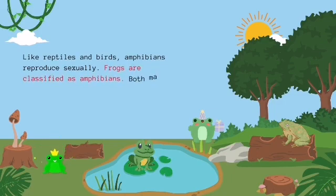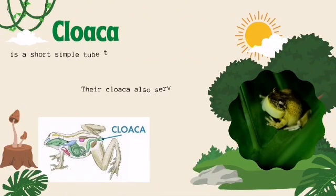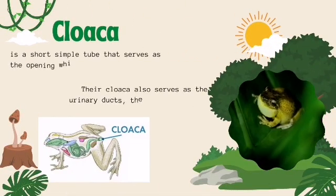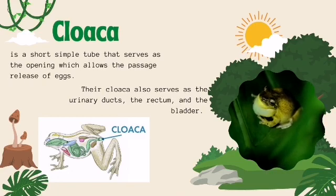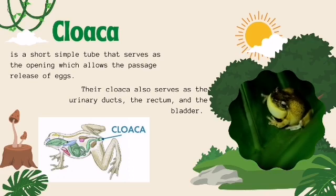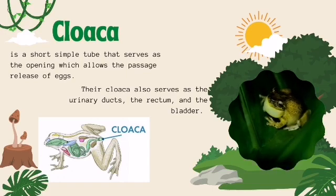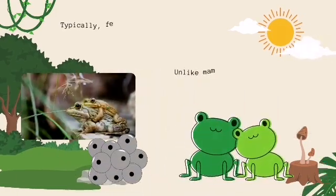Frogs are classified as amphibians. Both male and female frogs have a cloaca. A frog's cloaca is a short, simple tube that serves as the opening which allows the passage and release of eggs. Their cloaca also serves as the urinary ducts, the rectum, and the bladder. Typically, female frogs lay eggs.